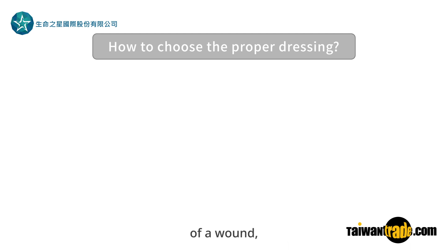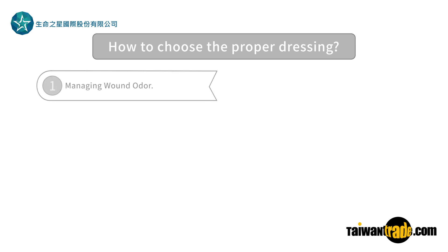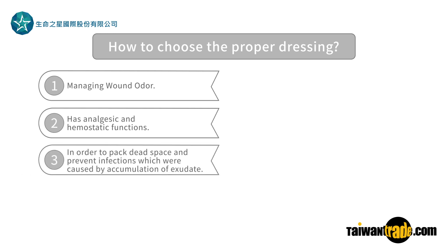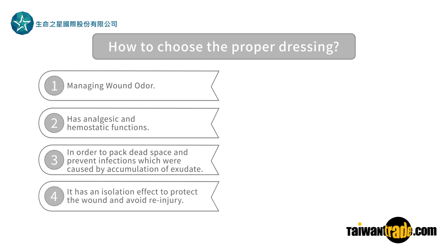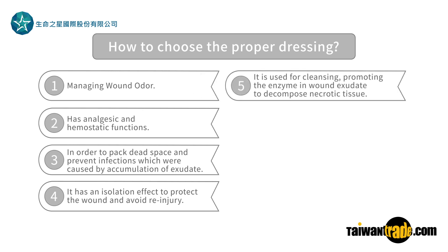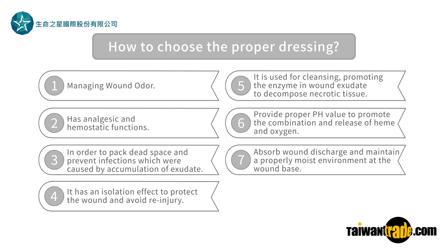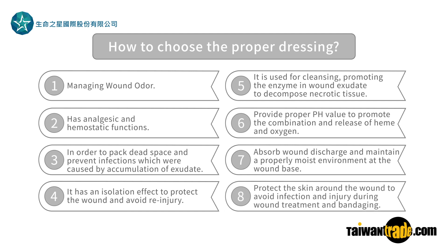The principles for wound dressing management follow eight guidelines: 1. Managing wound odor. 2. Analgesic and hemostatic functions. 3. Packing dead space and preventing infections caused by accumulation of exudate. 4. Providing an isolation effect to protect the wound and avoid re-injury. 5. Cleansing and promoting enzymes in wound exudate to decompose necrotic tissue. 6. Providing proper pH value to promote the combination and release of hemoglobin and oxygen. 7. Absorbing wound discharge and maintaining a properly moist environment at the wound base. 8. Protecting the skin around the wound to avoid infection and injury during wound treatment and bandaging.